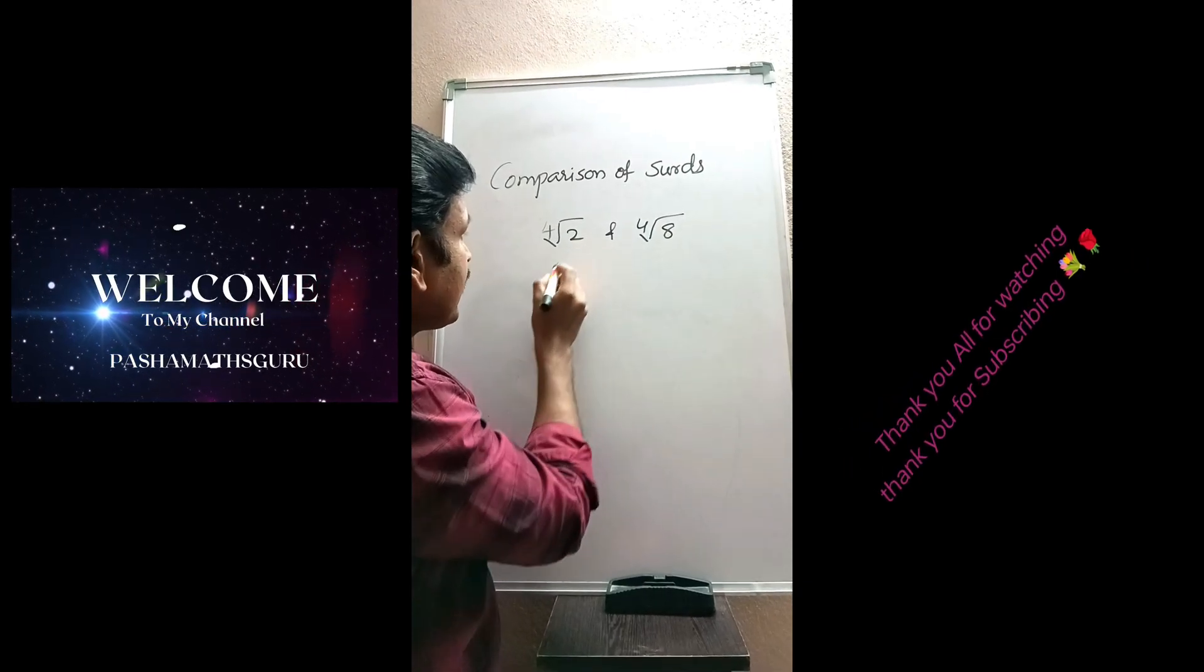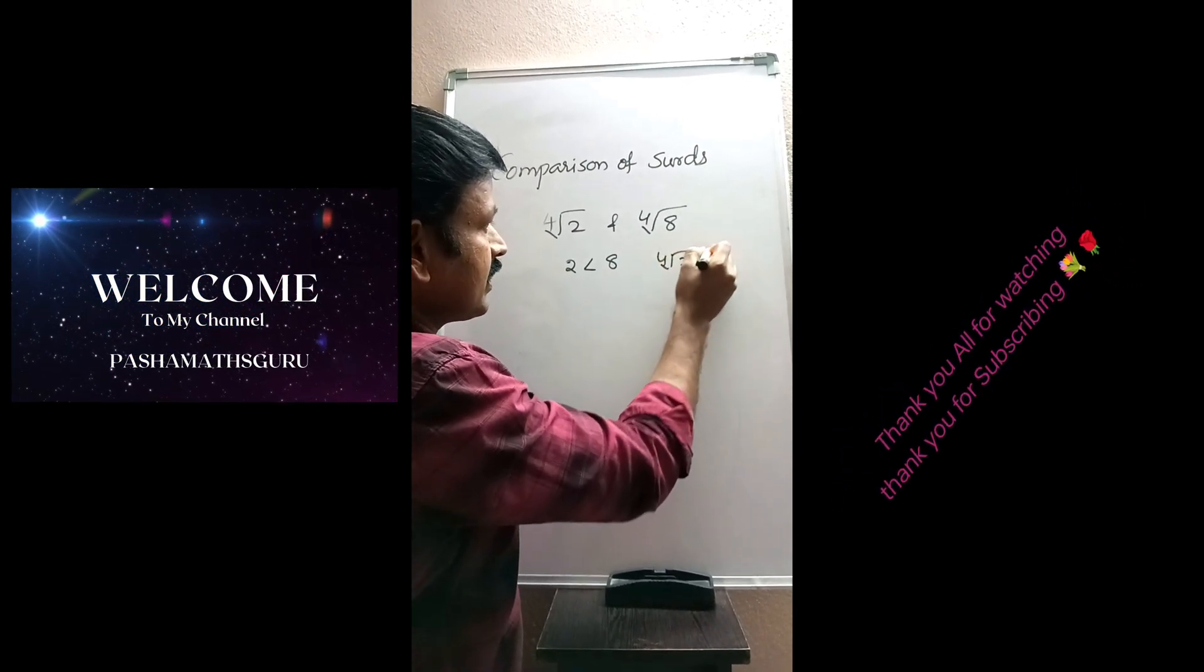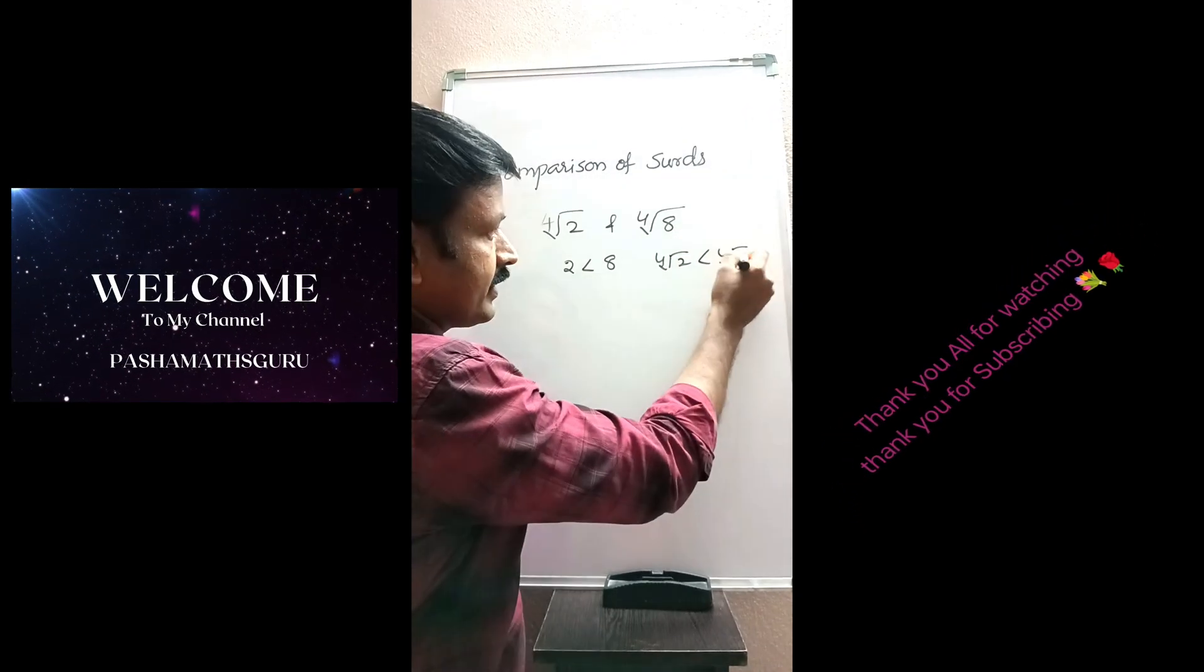Let us take two examples. For example, 4th root 2 and 4th root 8. Here, order of the surds is same as 2 is less than 8. Here, 4th root 2 less than 4th root 8.